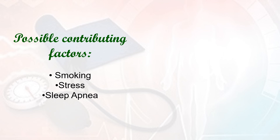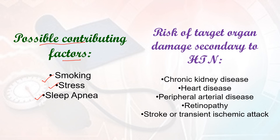The possible contributing factors are smoking, stress, and sleep apnea. Similarly, the risk to target organs because of hypertension: as a person has hypertension, the vital organs at risk include chronic kidney disease — hypertension damages the nephrons — heart diseases especially myocardial infarction, cardiomyopathy, and cardiac arrest, peripheral arterial disease, retinopathy, and stroke or transient ischemic attack.